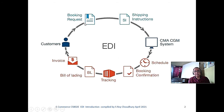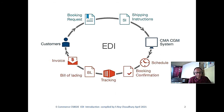EDI is nothing but booking instruction, shipping, follow-up, schedule, booking confirmation, tracking, bill of lading. Bill of lading is whenever you are shipping — at the shipping point you have to declare what items are there — invoice to be generated, and the customer.